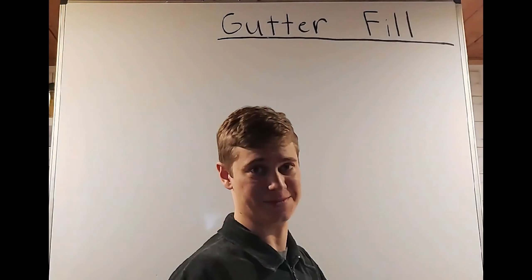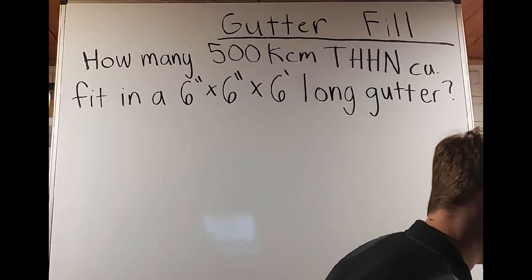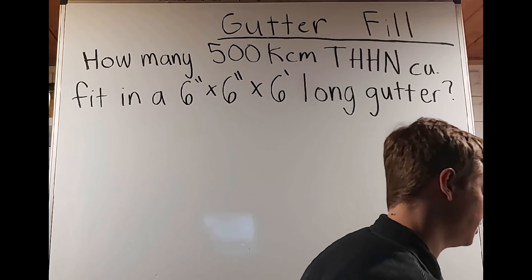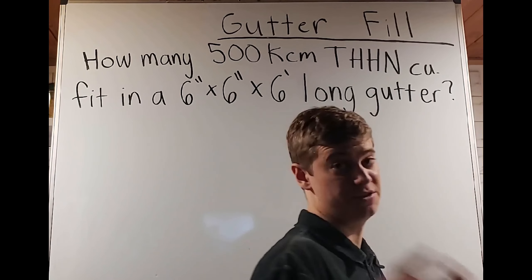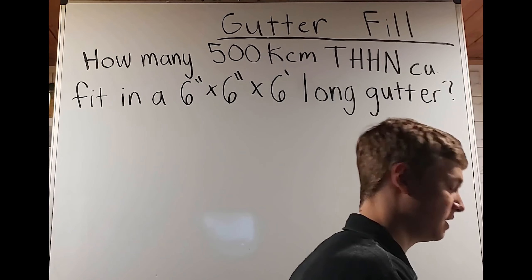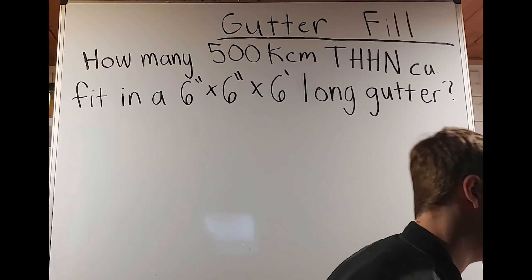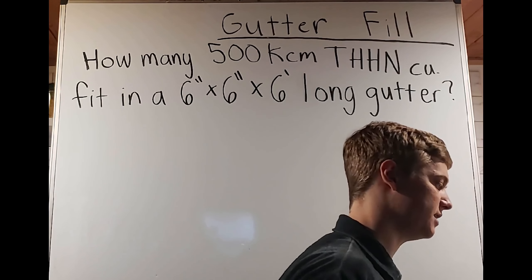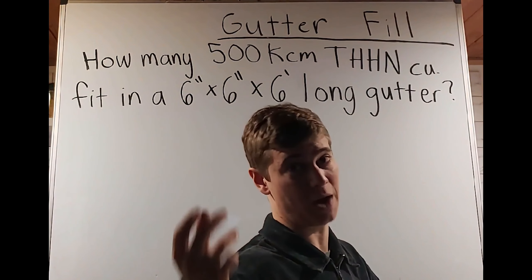This is actually very simple. If we go over to 376.22 of the codebook, where it says A cross-sectional area of wireway, we see the cross-sectional area of all conductors or cables at any cross-section of a wireway shall not exceed 20% of that interior cross-sectional area of the wireway. We also see an adjustment factor for B — if you have more than 30 conductors at any cross-section of the wireway, you're going to want to use adjustment factors in 310.15(C)(1). This only applies to current-carrying conductors, so neutral and hot conductors, not the grounding or bonding conductors.